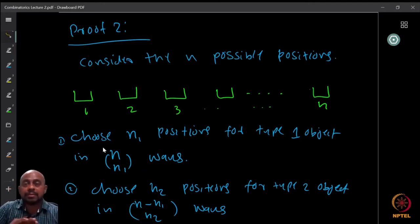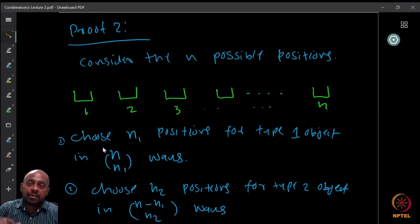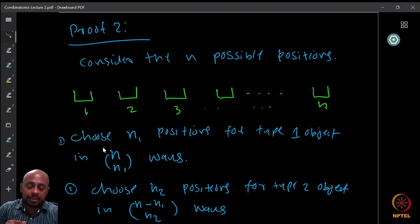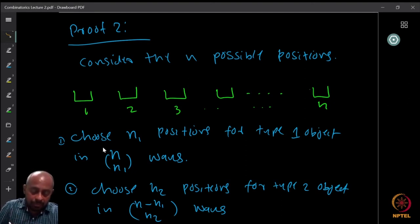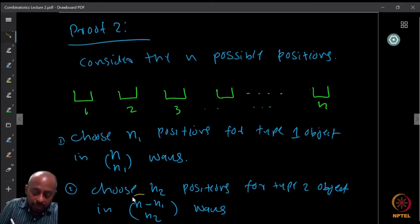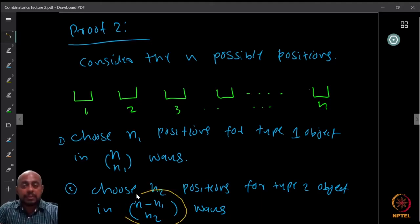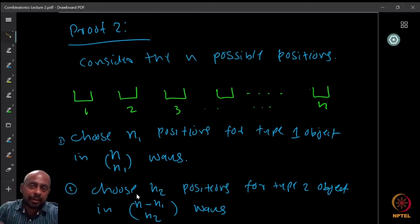Once I have selected the n1 positions, those positions are not available anymore. So once I have removed these n1 positions and put the type 1 object there, I look at the remaining n minus n1 positions and out of these, I choose n2 other positions. In these n2 positions, I will put the type 2 objects. They are identical, I don't care about order, I just put them there.